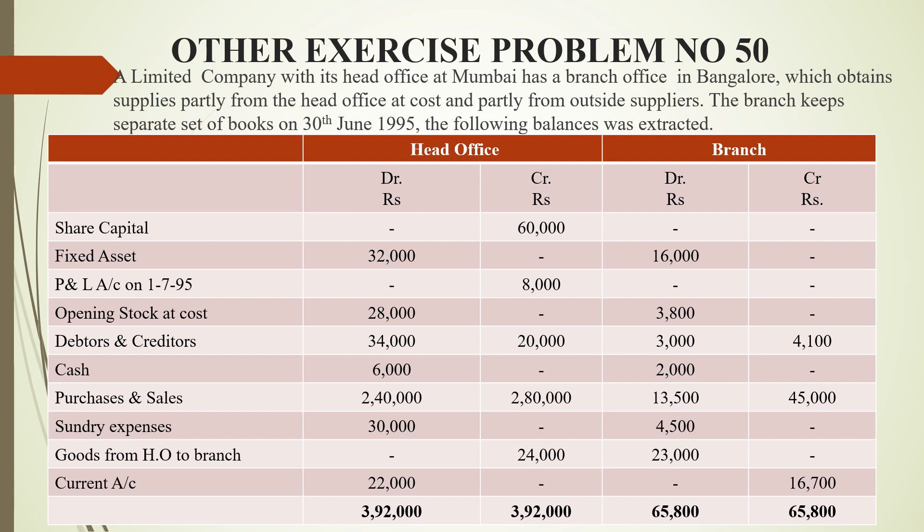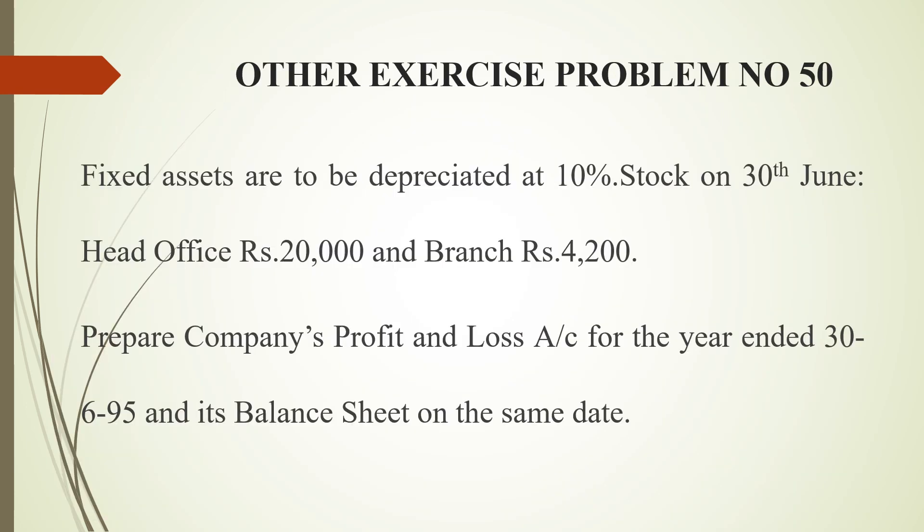In this question, you can get values for head office and branch. Since it is an independent branch, you can get goods from the head office and from outside suppliers. These are all the values given, along with the adjustments.